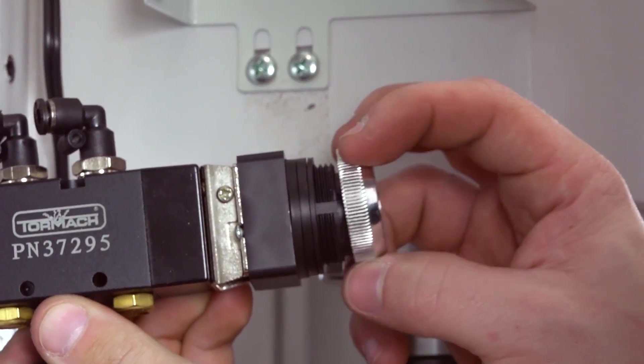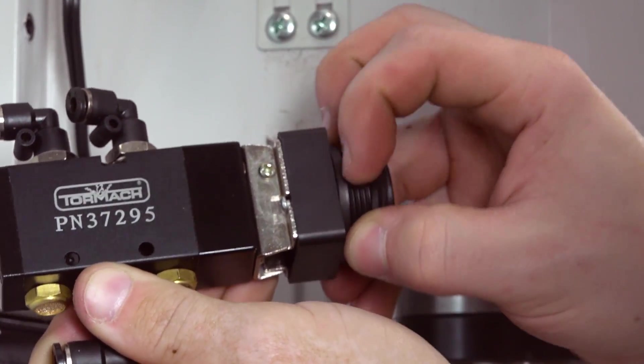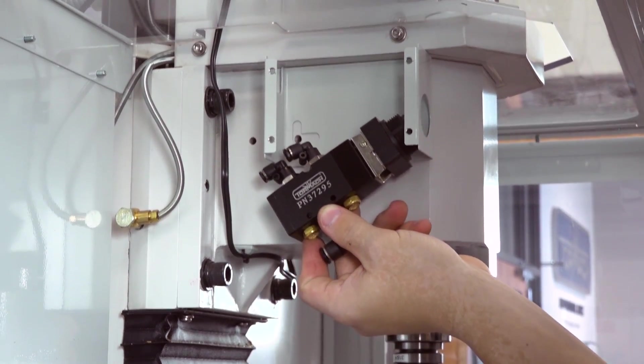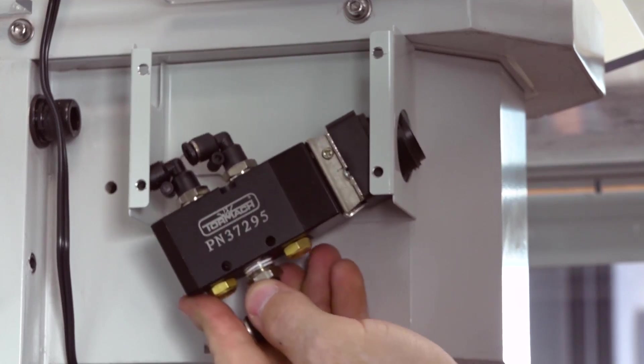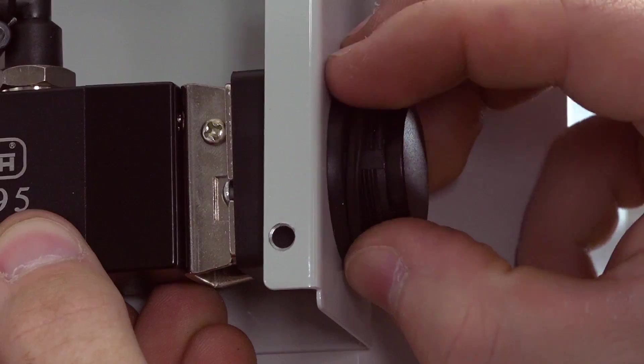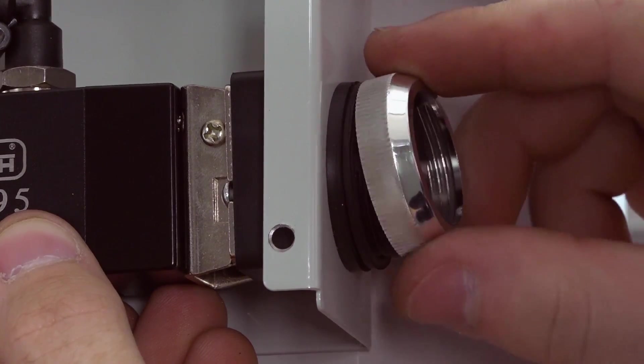Unscrew the push button cap from the power drawbar button assembly and remove the first two O-rings, leaving the third in place. Insert the power drawbar button assembly through the hole on the button box base. Reinstall the two O-rings. Screw on the push button cap to secure the assembly within the button box.